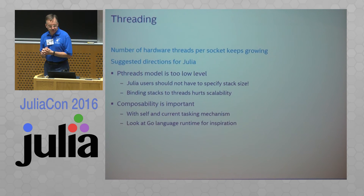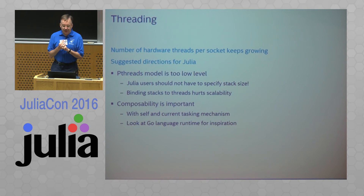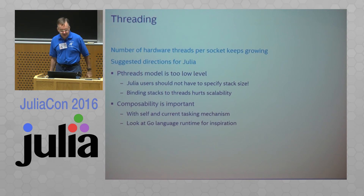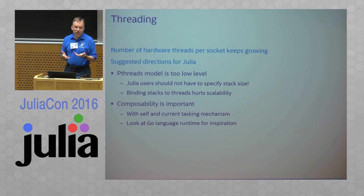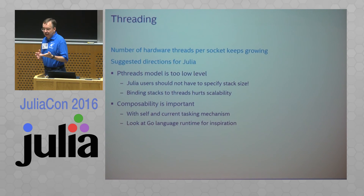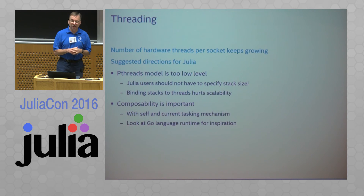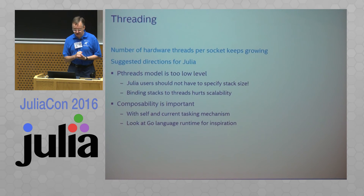On threading: the number of hardware threads per socket keeps growing, so we need better threading support. Pthreads is way too low-level a model — it's actually a terrible model now. In Pthreads you have to specify the stack size; if it's not big enough, your code crashes — you really shouldn't have to do that, particularly when calling black-box code. Binding stacks to threads — one stack per thread, locked to that thread — is very bad for scalability. Every modern scalable system has gotten away from that: Cilk has, OpenMP with untied tasks has, and Go has completely divorced itself from that model.